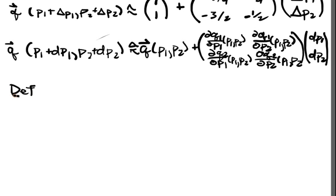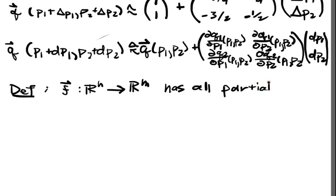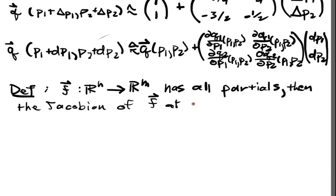So suppose F from R^n into R^m has all partial derivatives, then the Jacobian of F at x star is I'm going to write DF x star.